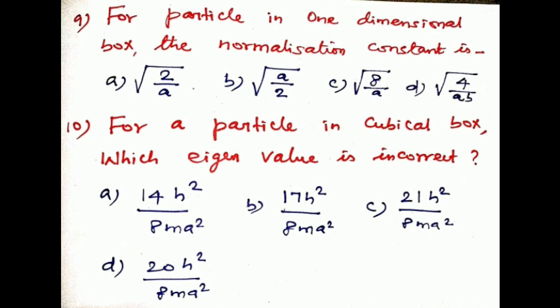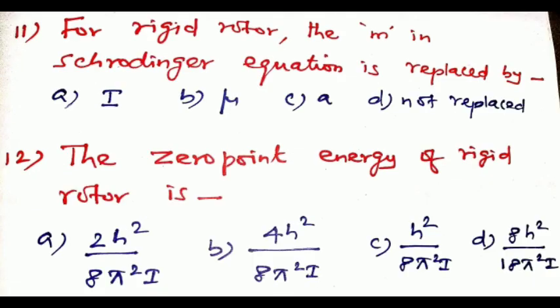Question number eleven: for a rigid rotor, the m in the Schrödinger equation is replaced by what? The answer is option b, the reduced mass (μ), which replaces the mass m in the Schrödinger equation for a rigid rotor.